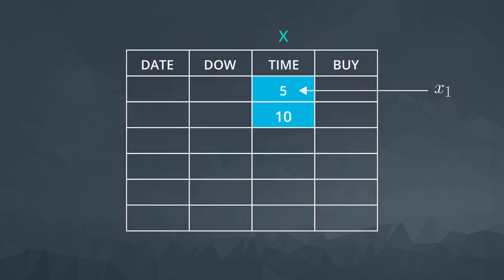The second visitor spends 10 minutes on the site, which we would notate as x2. Again, since this is an observed value, this is a lowercase x.